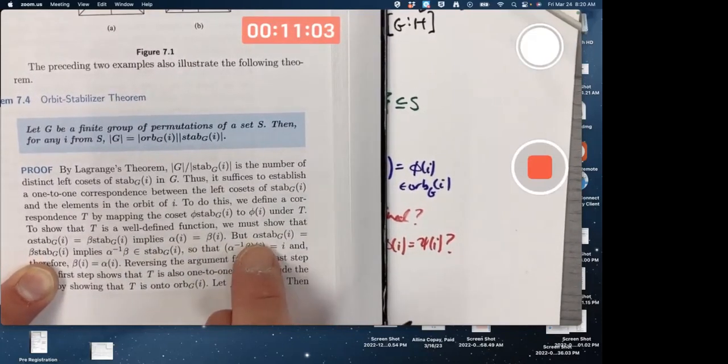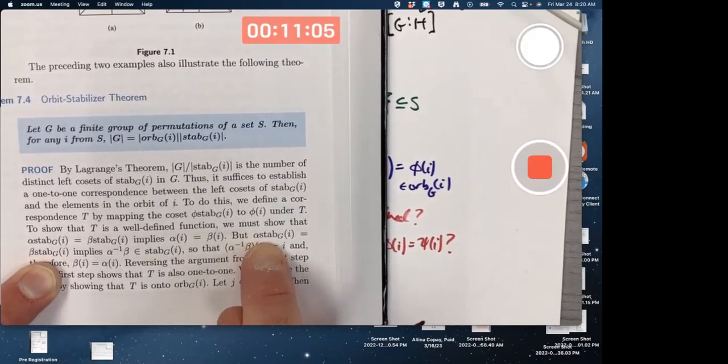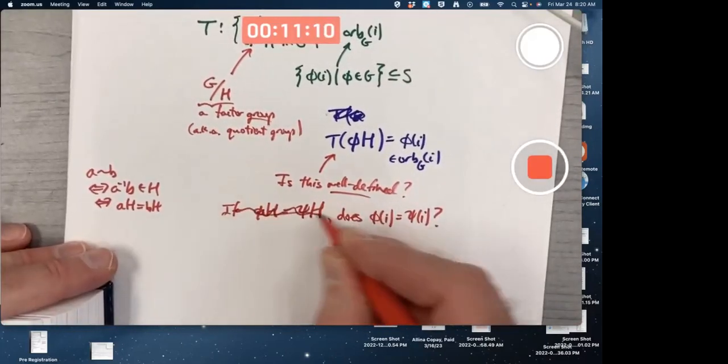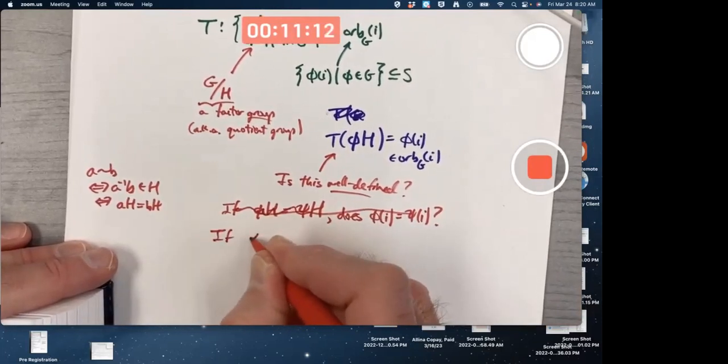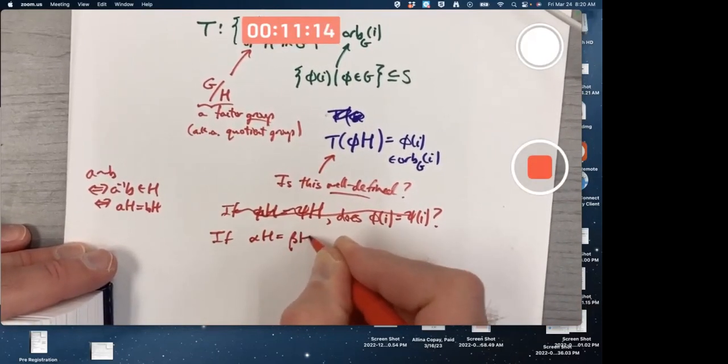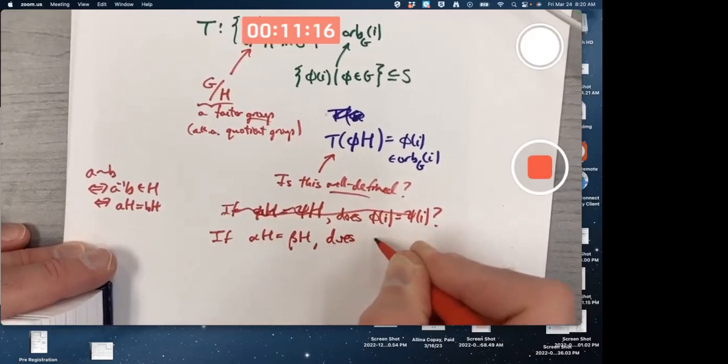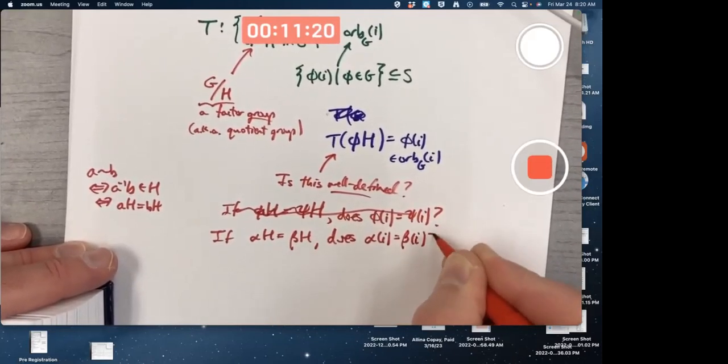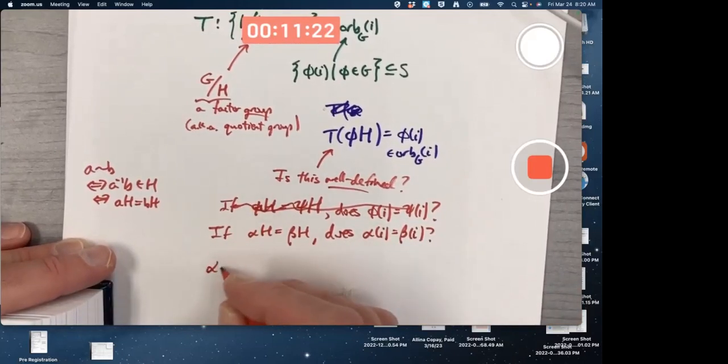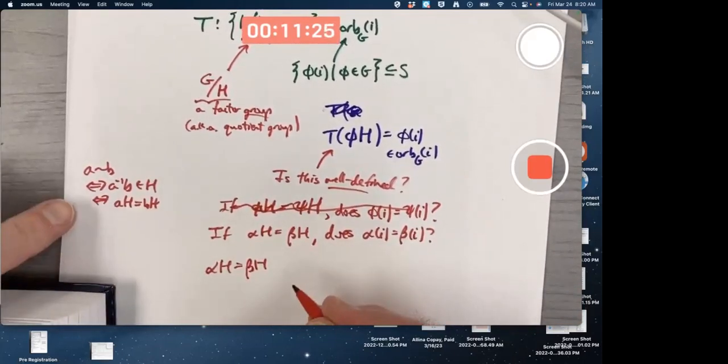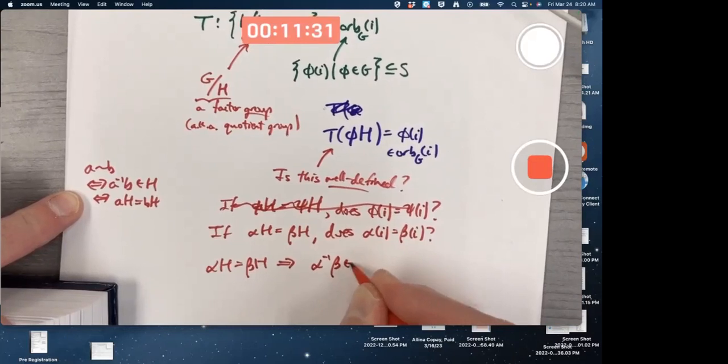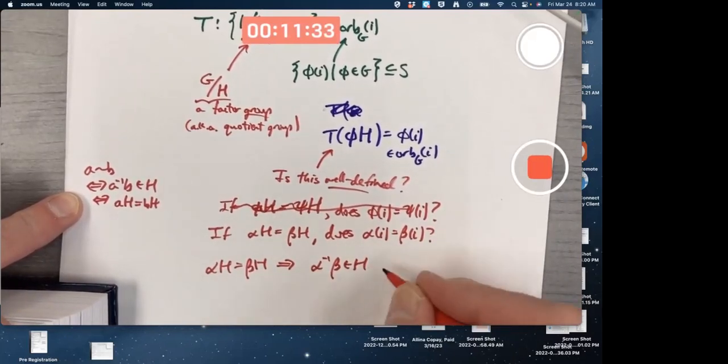How? Well, come back here. I'll go ahead and use the book's notation. If alpha H equals beta H, does alpha of I equal beta of I? Alpha H equaling beta H, just like over here it's a property of cosets, implies alpha inverse beta is in H, which is the stabilizer.